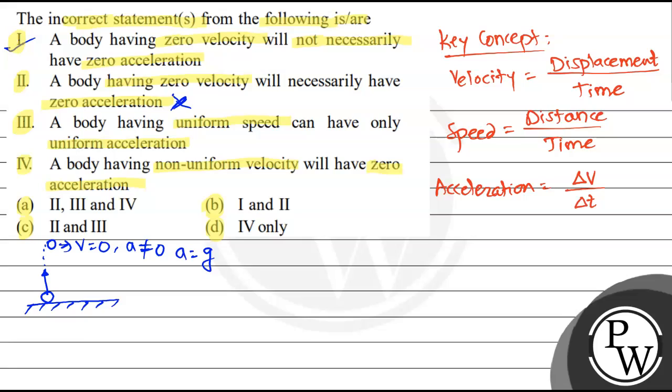Third: a body having uniform speed can have only uniform acceleration. Ab iske liye example lete hain mai. Maan lijiye aapka object hai travelling along this uniform circular motion, UCM. Particle is travelling, let's say particle A started from here.